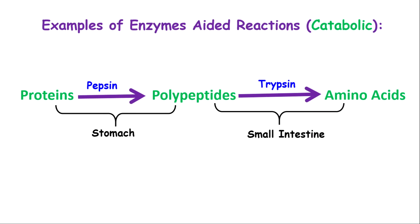Another bonus example is that proteins are broken down by pepsin in our stomach and turned into polypeptides. The polypeptides are brought to the small intestine where they are broken down by trypsin, which is produced by the pancreas. The end result is amino acids. So simply, when proteins are broken down by enzymes, the end product is amino acids.